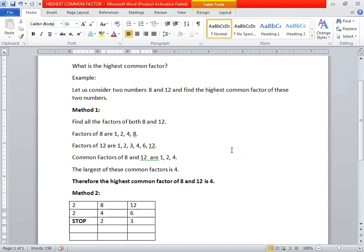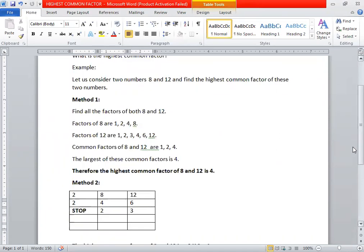Now what is the highest common factor? The largest number in these common factors is 4. So the highest common factor of 8 and 12 is 4.